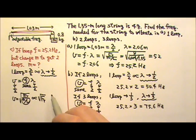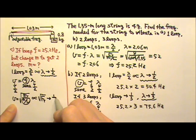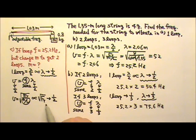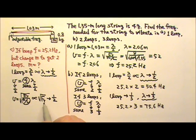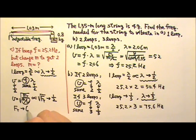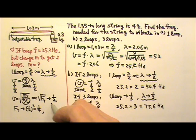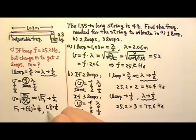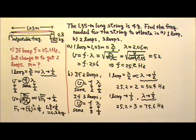If speed changes by a factor of one-half, then the square root of tension changes by one-half. Squaring both sides, the tension must change by a factor of one-half squared, which is one-fourth. We used to have 0.8 kilograms hanging, so now we need 0.8 times one-fourth, which is 0.2 kilograms, or 200 grams.